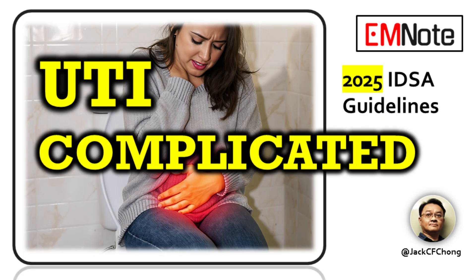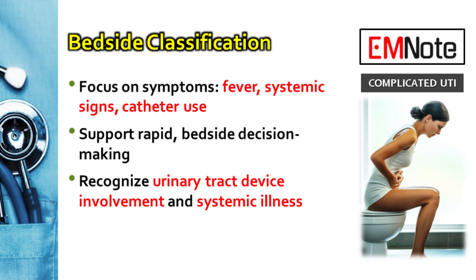The guidelines shift away from complex definitions of C-UTIs, focusing instead on observable symptoms such as fever, systemic signs, and catheter use. This clinical approach supports rapid, bedside decision-making. Recognizing urinary tract device involvement and systemic illness as markers of C-UTI further aids in prompt diagnosis and treatment.